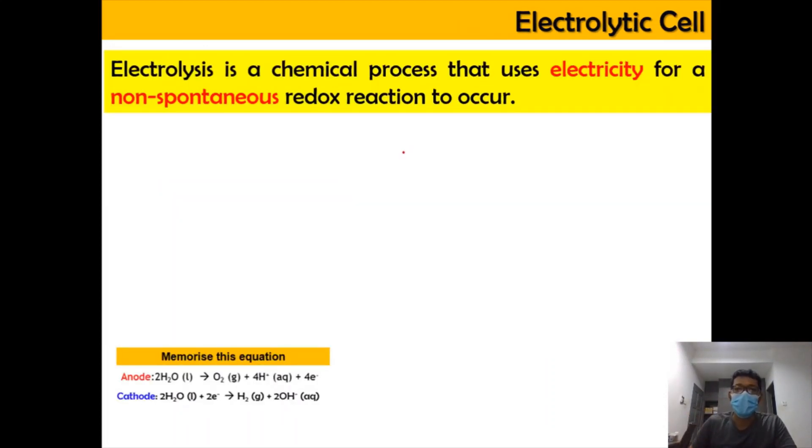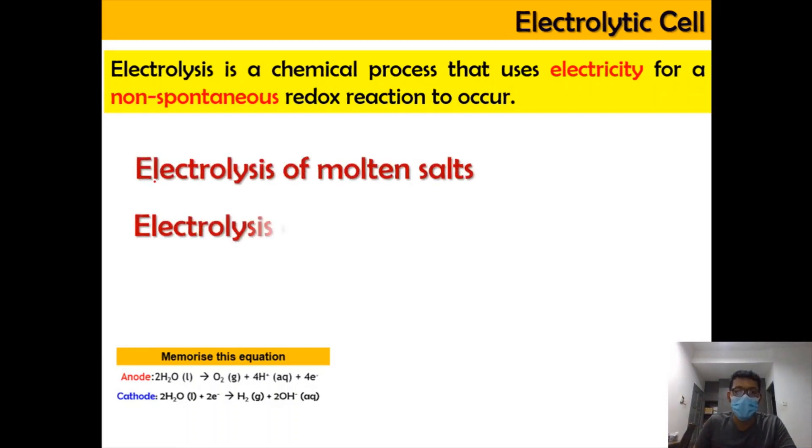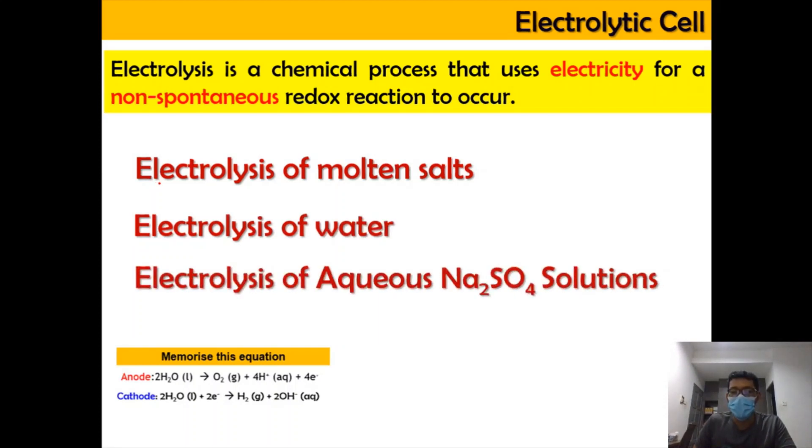Electrolytic or electrolysis is a process that uses electricity where it involves an introduction of the electric cell or battery in order for the reaction to occur. We're going to look into that in three cases: molten state, water, and aqueous Na2SO4 solution. As mentioned before, it is advisable for you to memorize this equation for the oxidation of water at anode and reduction of water at cathode.